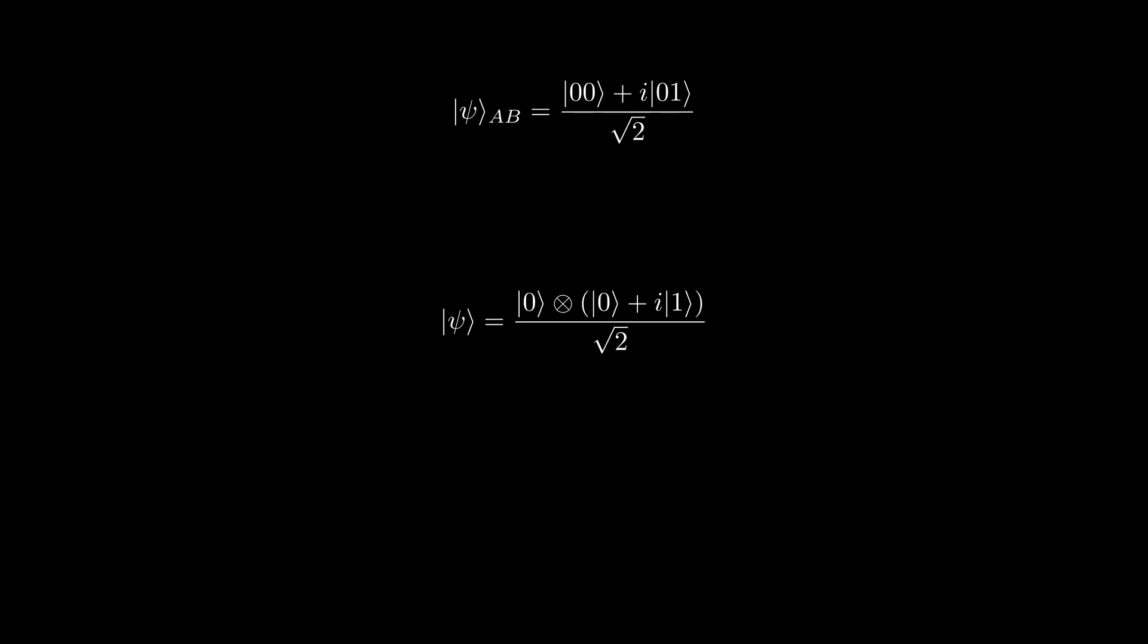However, this shows you how you can compute the Schmidt decomposition if such a trick is not possible. Thus far, we have considered a system AB and talked about how to extract information about system A. However, consider the opposite setup. In particular, suppose you have a system A whose density matrix is a mixed state rho A. Is it possible to define an auxiliary system B such that we can define a pure state over AB whose partial trace over B leaves us with rho A?